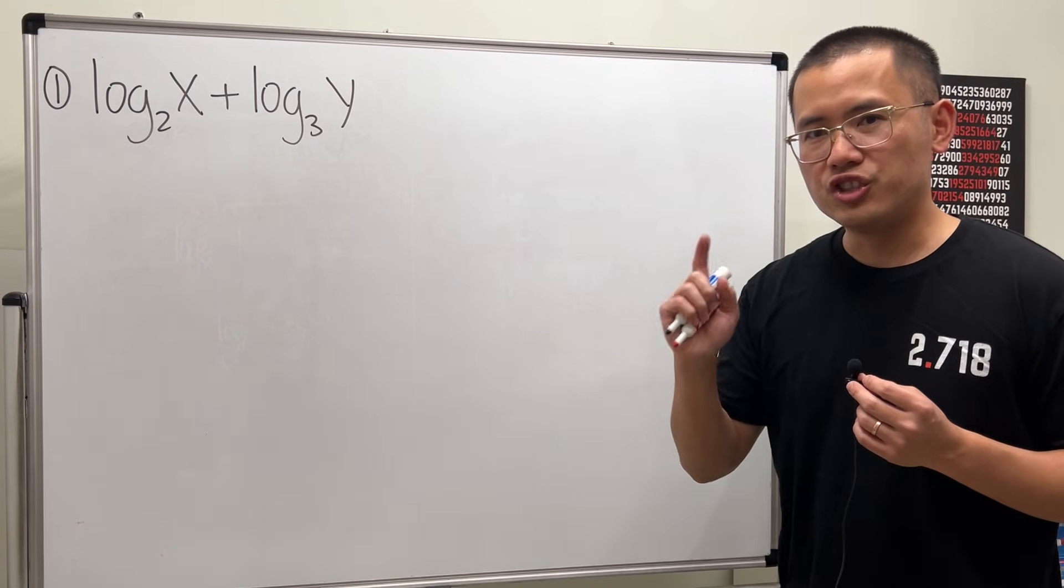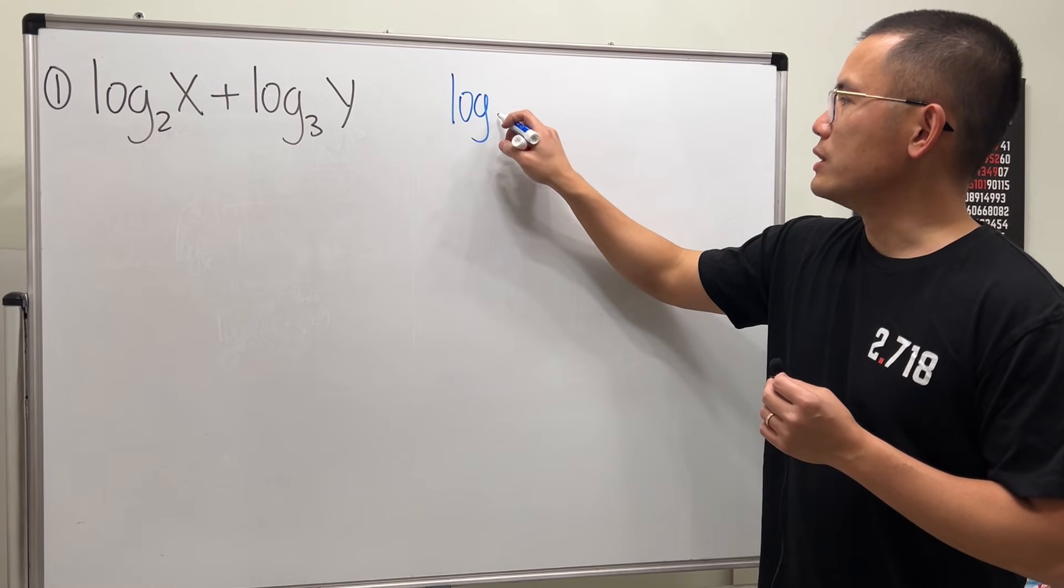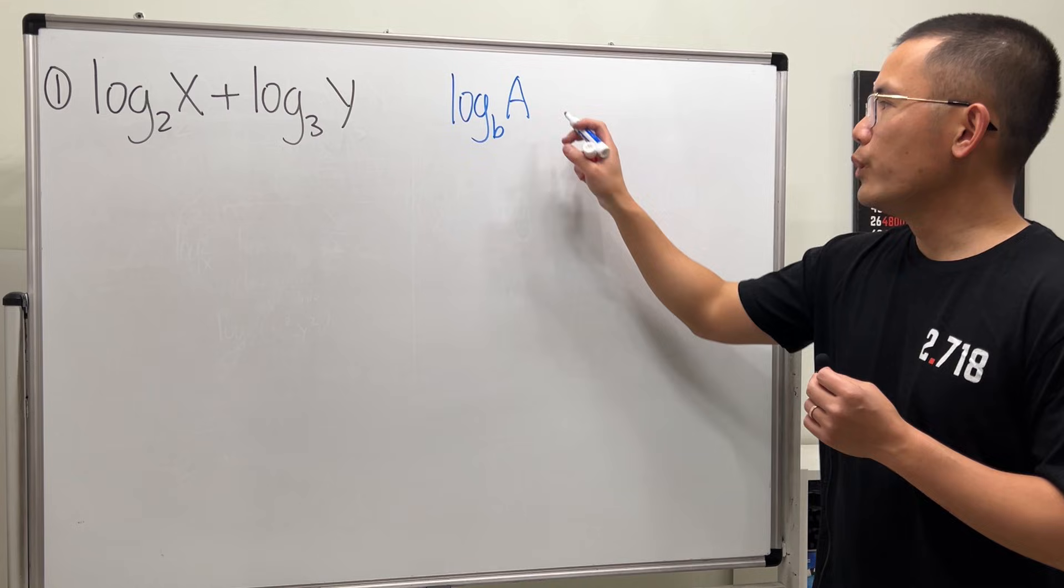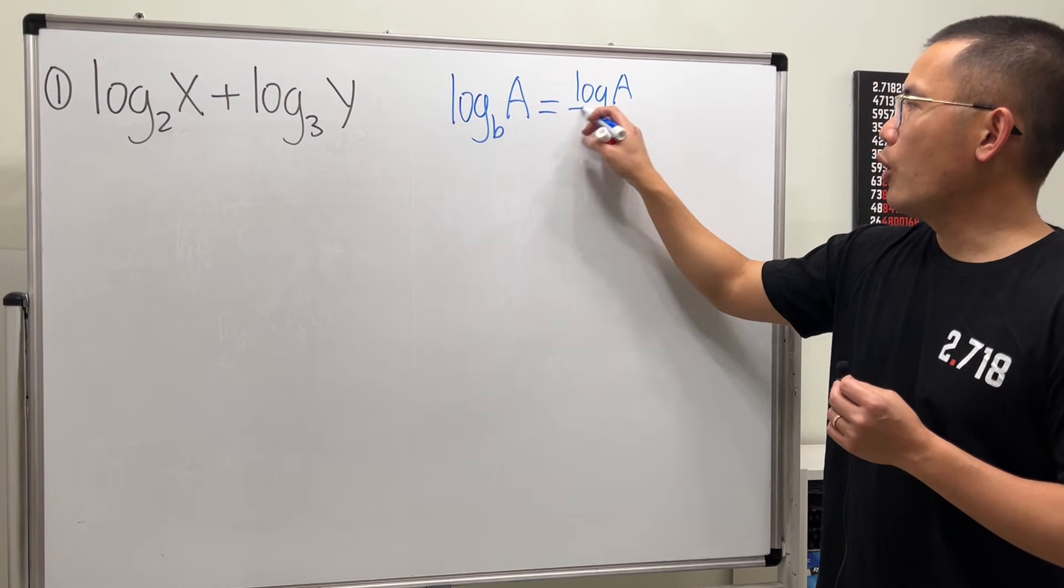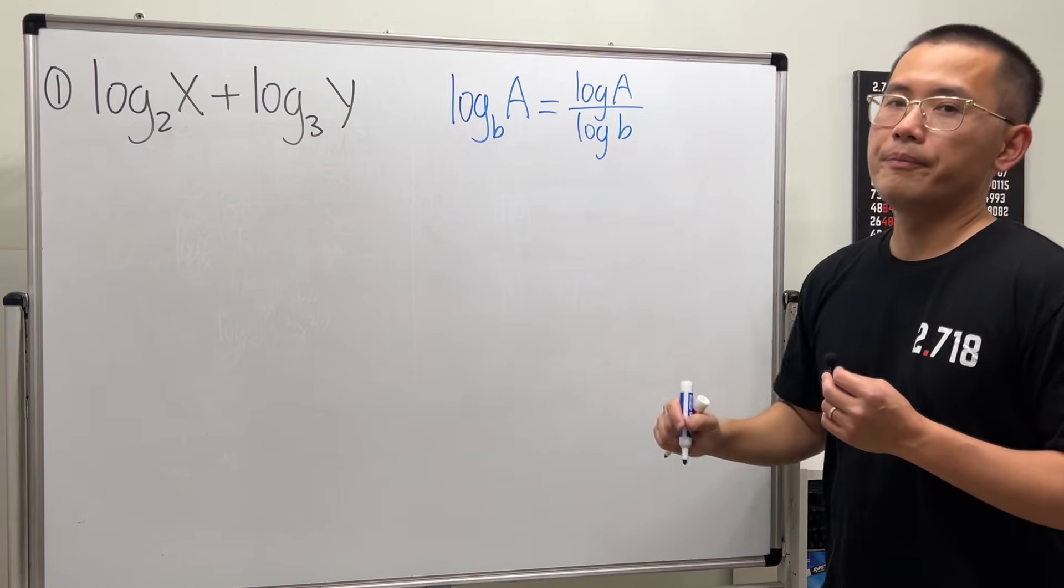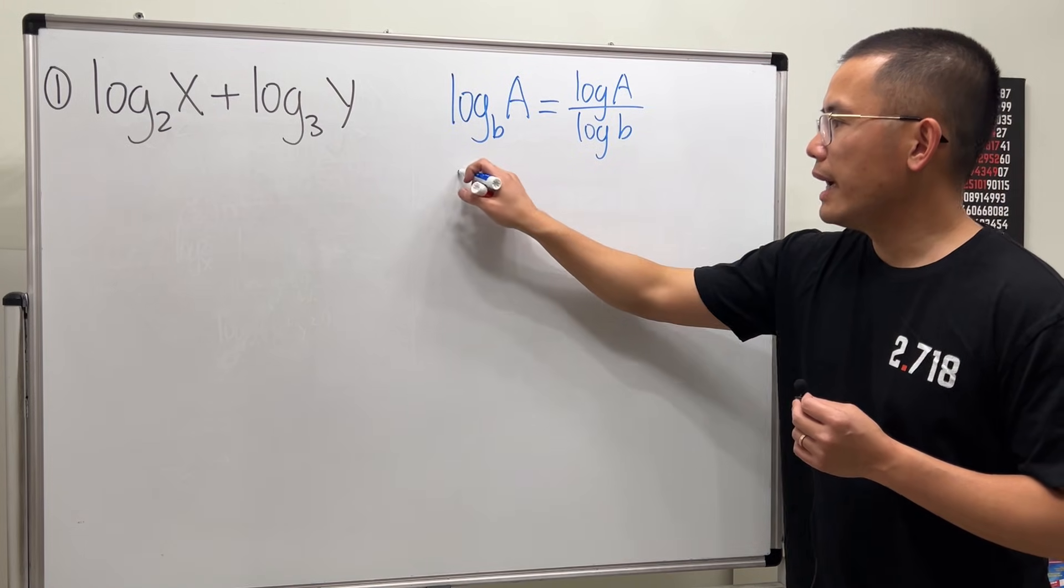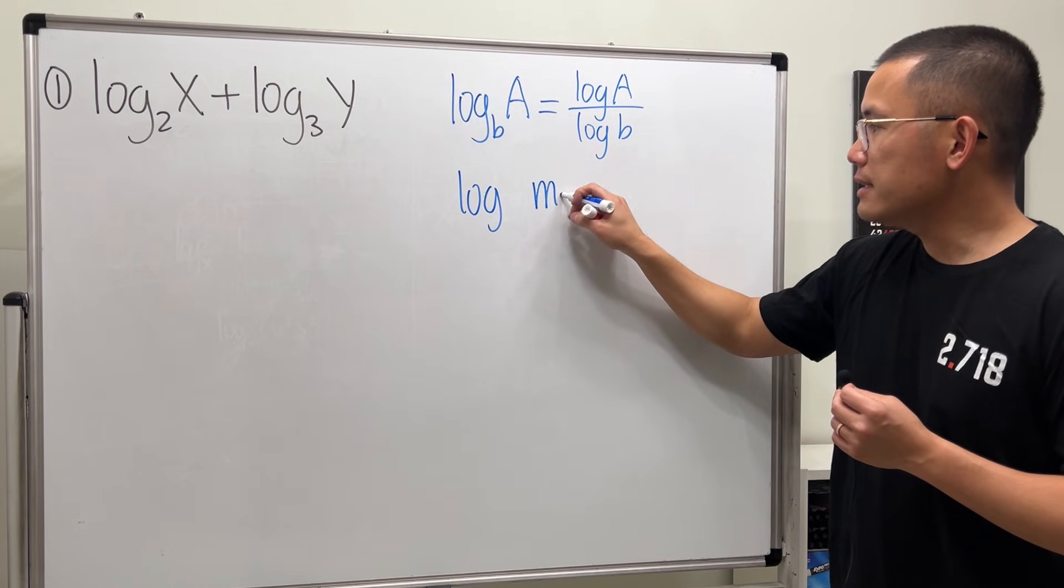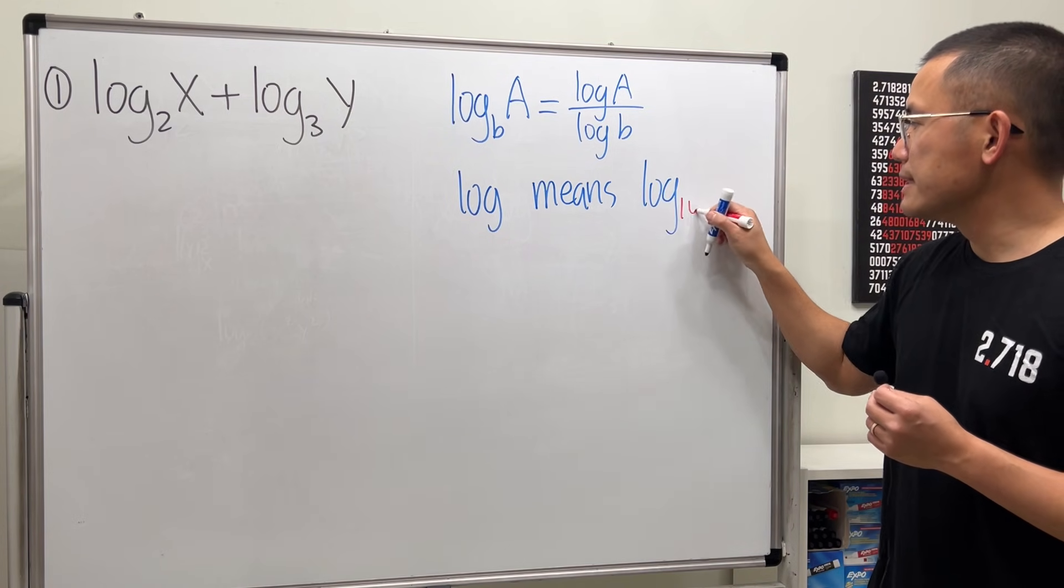The key is to use the change of base formula. If I have log with some base B, and then the input is A, then we can write this as log of A over log of B. Notice that I'm just using the regular log on your calculator. When we have log without any little number, it means that we have log with base 10.